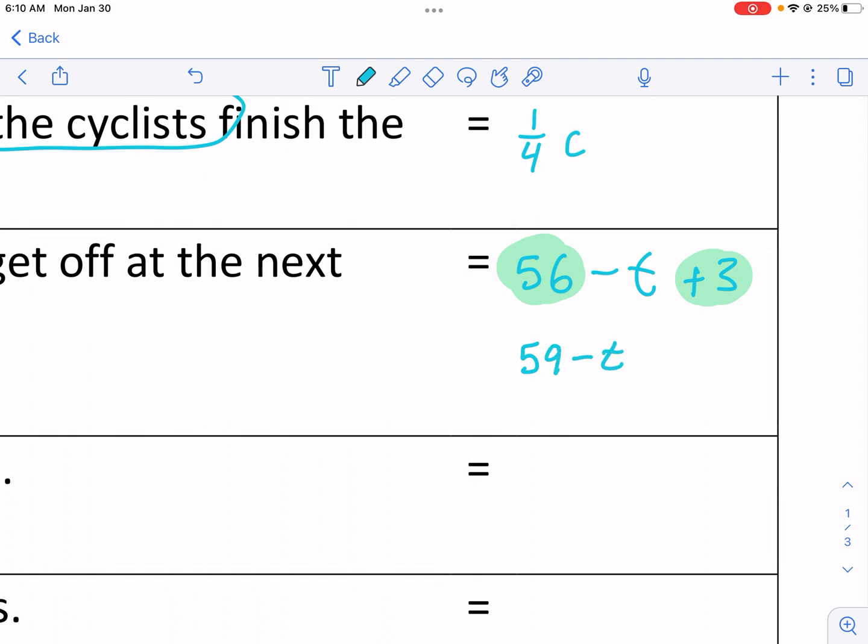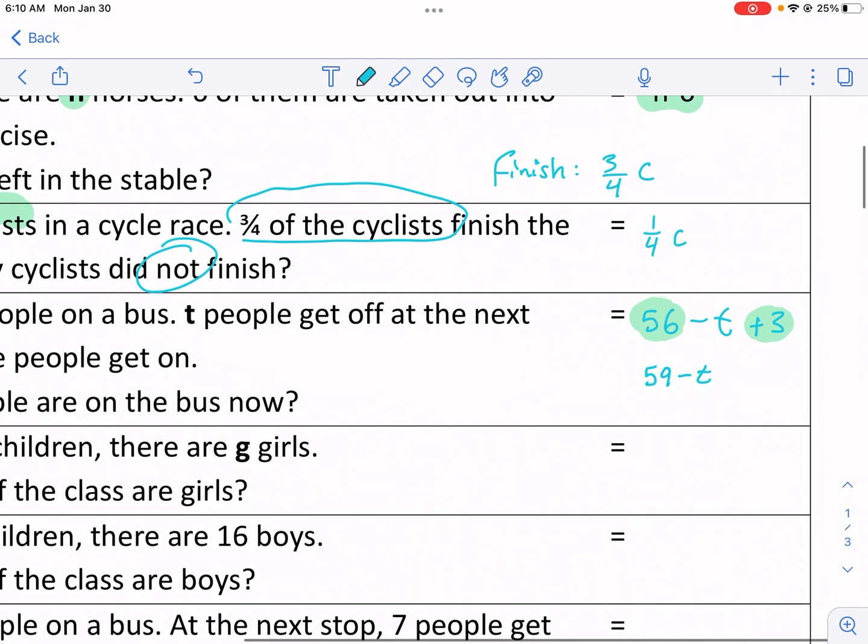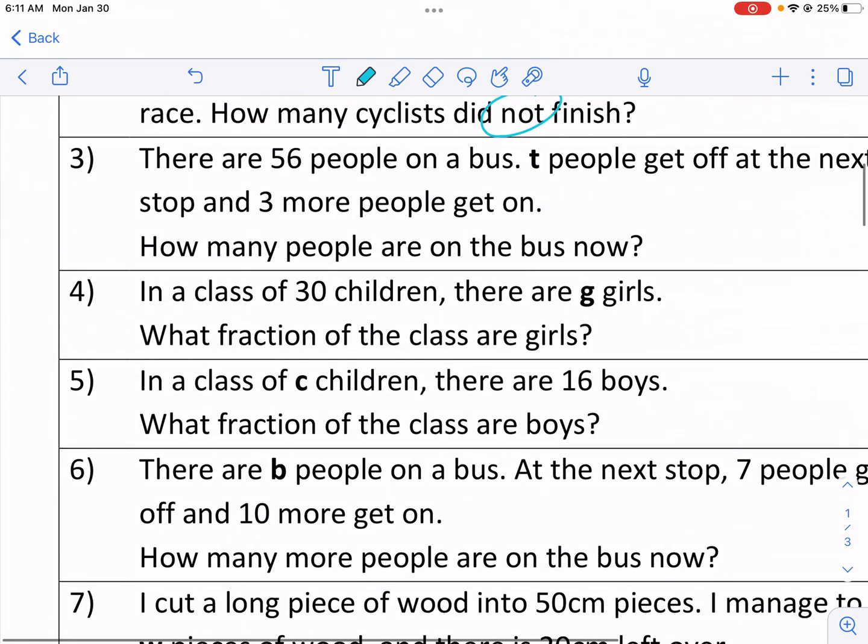If we add those two together, we can get 59 minus T. So essentially, we just combine the three that got on the bus. And then we still have to subtract the T people that got off the bus. So that's how we do that one. Moving on to, I think that's number four.